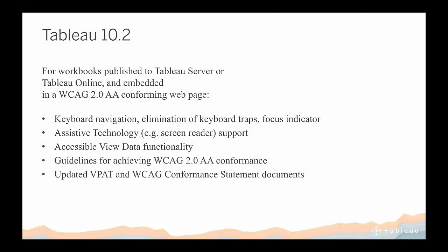Tableau 10.2 is the first version with specific features to enable accessible content. Prior to 10.2, you basically couldn't use a keyboard to interact with a visualization, and assistive technology like screen readers found Tableau content completely opaque. In Tableau 10.2, if you've created a workbook and published it to Server or Online, embedded in a WCAG-conforming webpage, you get three things for free — with nothing needed in the authoring experience: keyboard navigation, assistive technology support, and accessible view data functionality.